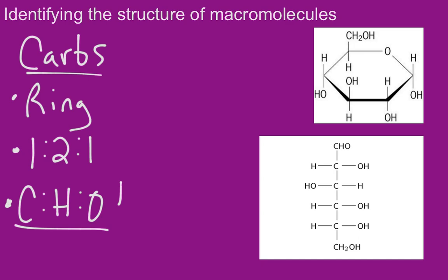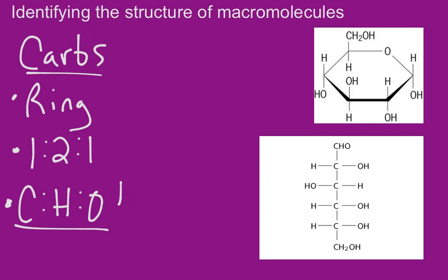Here we have a couple of examples of carbohydrates. First, the one on top is glucose, and it is in a ring structure — it makes a nice hexagon shape. Not all monosaccharides are going to make a hexagon; if it's a five-carbon sugar it'll be a pentagon, but they are going to be in the shape of a ring. So if you see a structure like this and it only has carbon, hydrogen, and oxygen, it is definitely a carbohydrate.